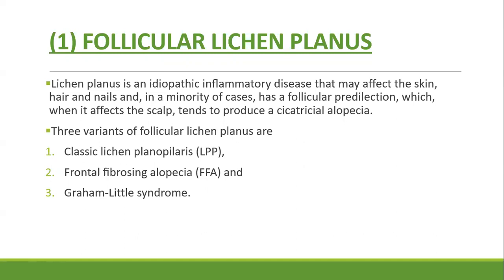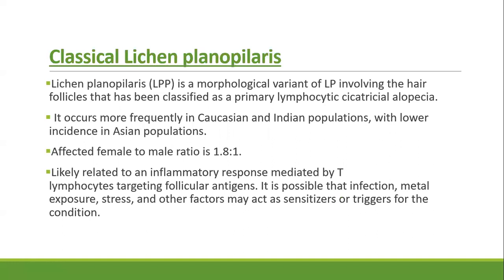There are three variants of follicular lichen planus: classical lichen planopilaris, frontal fibrosing alopecia, and Graham-Little syndrome. Lichen planopilaris is morphologically a variant of lichen planus that involves the hair follicle and has been classified as a primary lymphocytic cicatricial alopecia.